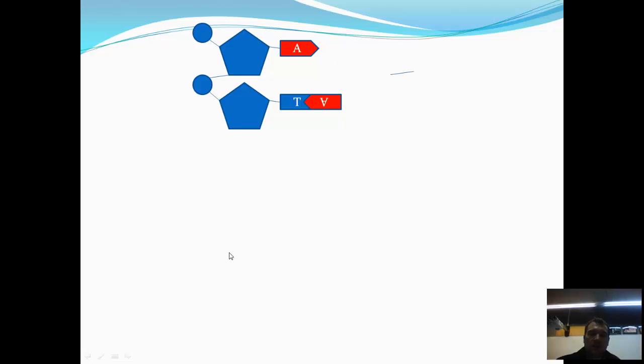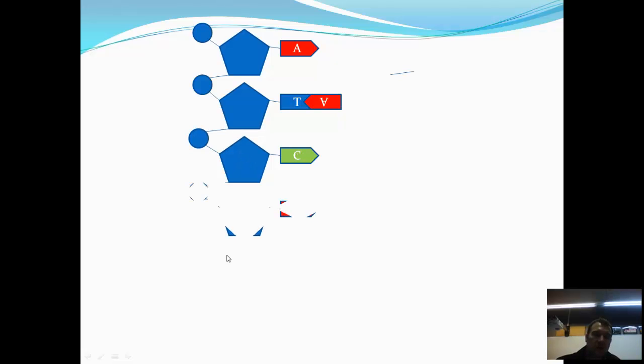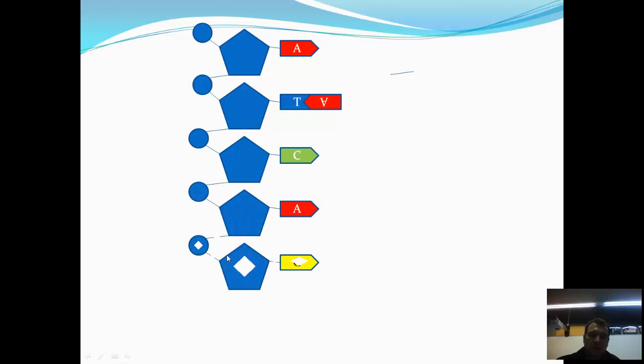So how do we stick them all together? Well, what happens is the phosphates and the sugars are bonded together in a long chain, so what is formed is what we call a phosphate-sugar backbone, as you can see there.